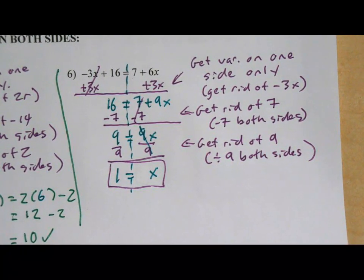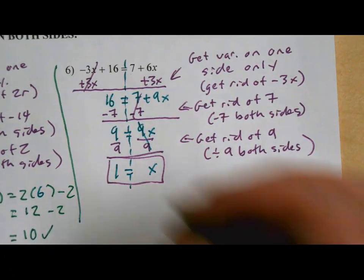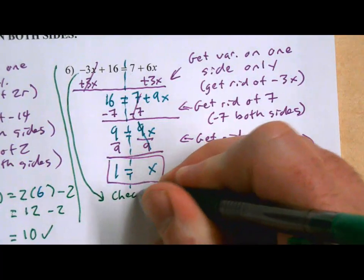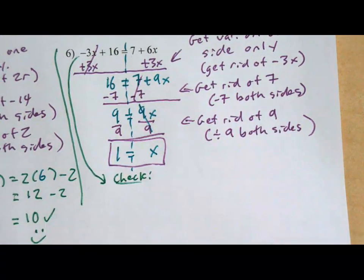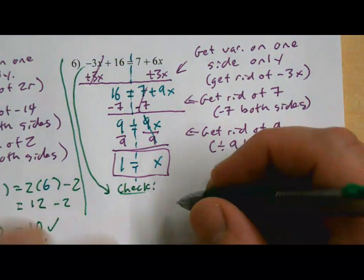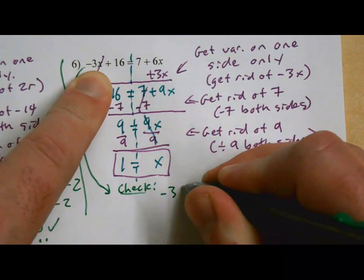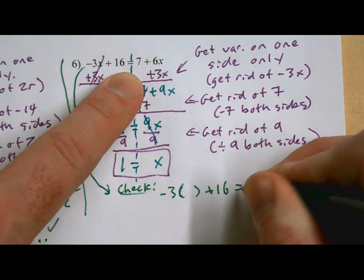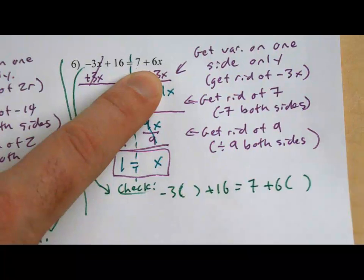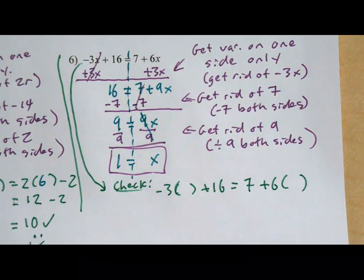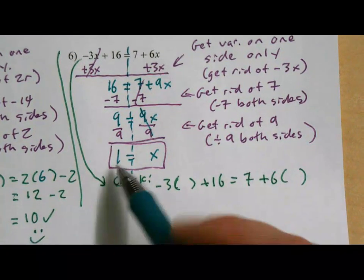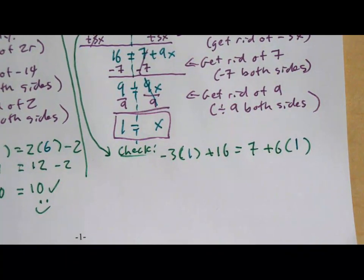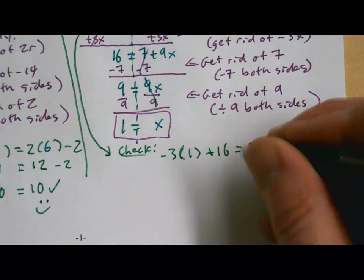And that got us to an answer of x equals 1, but I'm not 100% sure. Let's just do a quick check. So I'm going to take my original equation and copy it down. I'm just going to leave out all my x's. So negative 3x plus 16 equals 7 plus 6x. Just left those x's out. And in place of those x's, I'm going to put my x value. I think it's 1. I hope it's 1. So we'll put that in both spots. And then we'll simplify both sides of our equals.